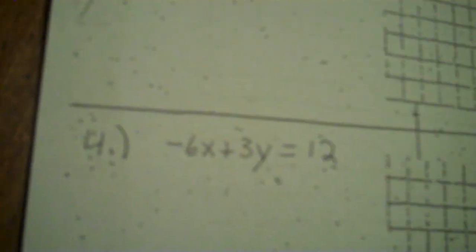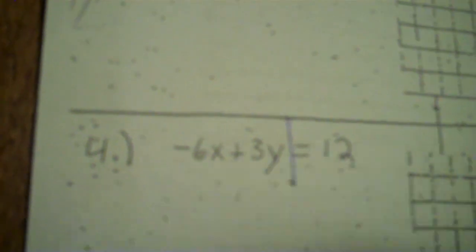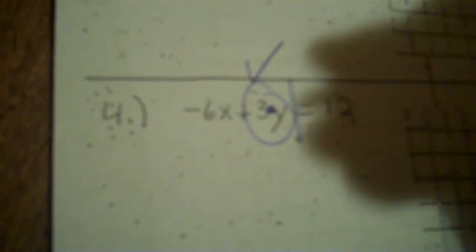Number four: negative six x plus three y equals 12. Do we have x and y? Yes. Is the y by itself? No. So we do not know our m and b — we don't know our slope and y-intercept. Check the coefficient of y: it's positive three, so we're good. If it were negative three, you'd have to make them all opposite, but it's positive.